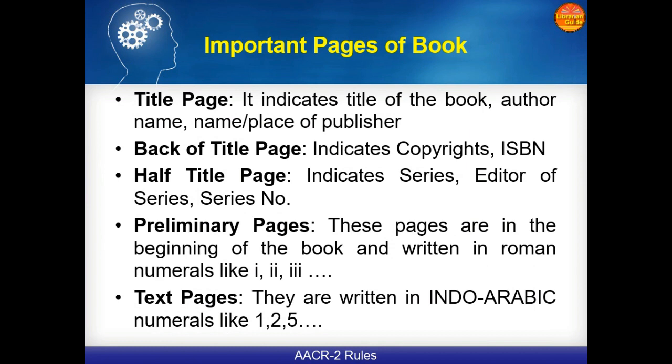The important pages of a book where we get information: the title page indicates the title of the book, author name, place, and name of publisher. The back of the title page gives copyright detail and ISBN number. The half title page indicates series, editor of series, and series number. Preliminary pages are at the beginning of the book and are written in Roman numerals. Text pages are written in Indo-Arabic numerals like 1, 2, 3, 4, 5, and so on.